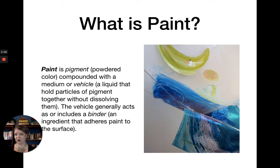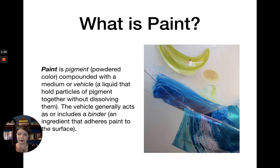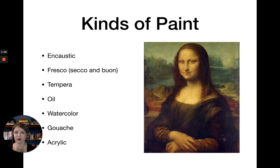The vehicle generally acts as or includes what's called a binder. A binder is an ingredient that sticks everything together, that adheres the paint to the surface that you're working on. You might recognize the word binder — it came up last time in drawing when we were talking about pastels, how one of the ingredients to roll them into sticks and hold them together was a binder. So that's what paint is: it's pigment, it's a vehicle that's liquid, and it's a binder that holds everything together. Those are the three main components of paint.